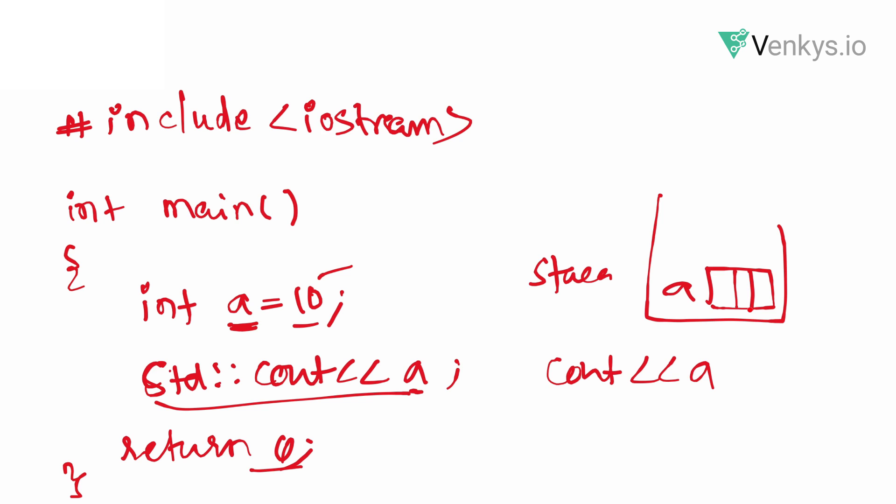Internally your address space has hexadecimal addresses starting from a range to an end range. Every time referring to those addresses and printing it is going to be a cumbersome job, so therefore we have simplified it with the variable names. Internally, every variable that you give has an address starting point.